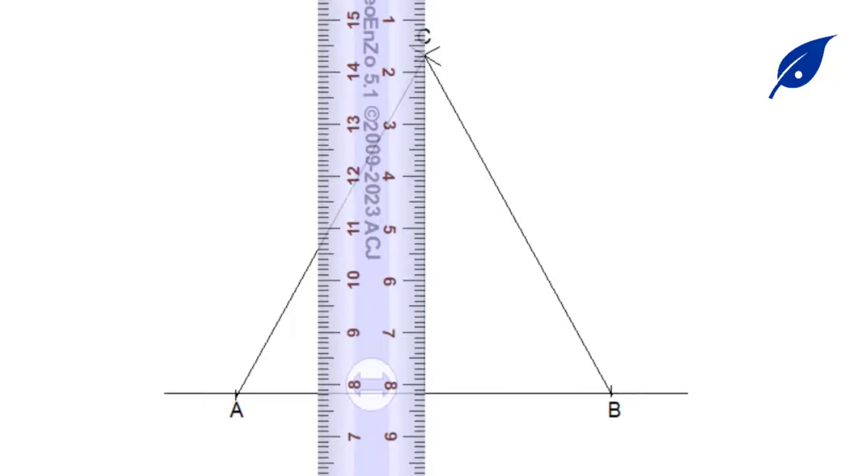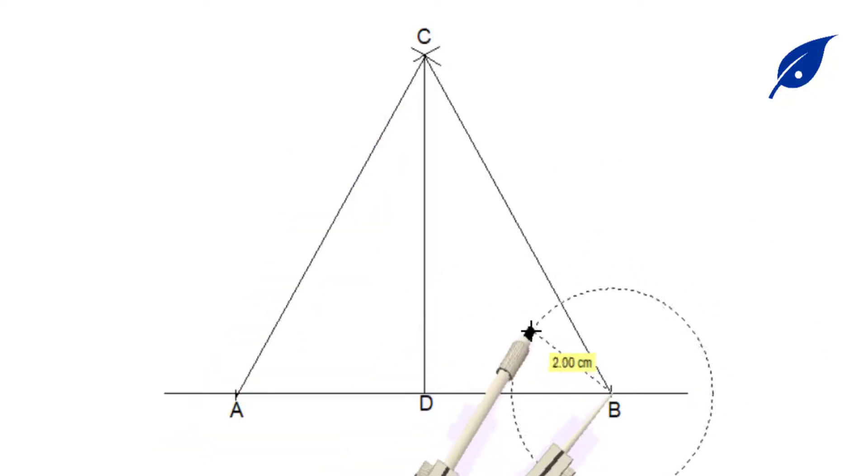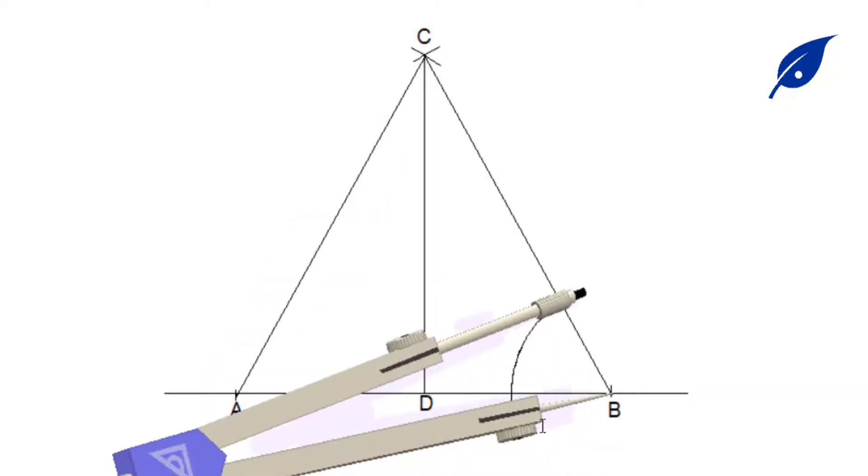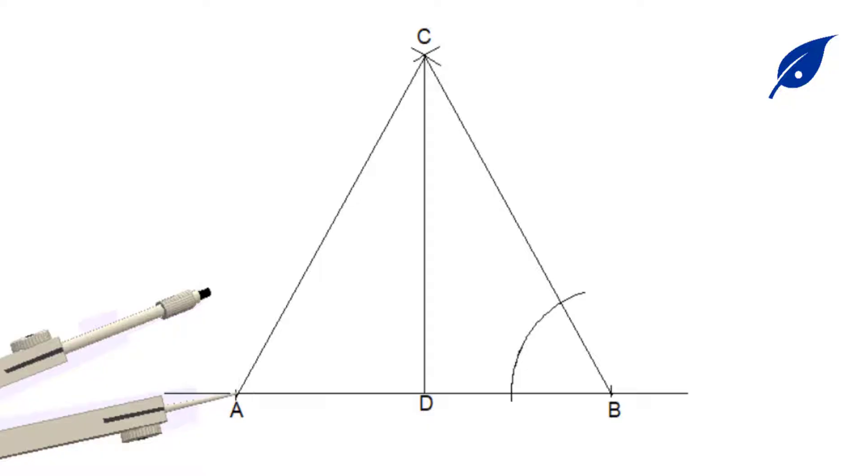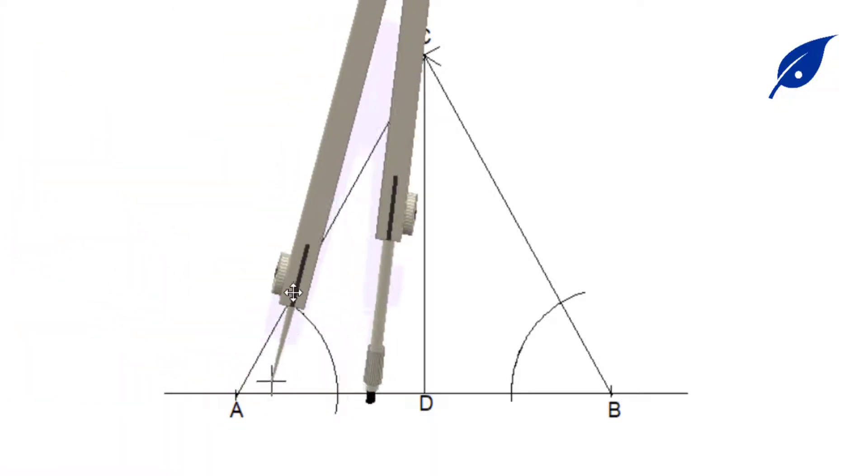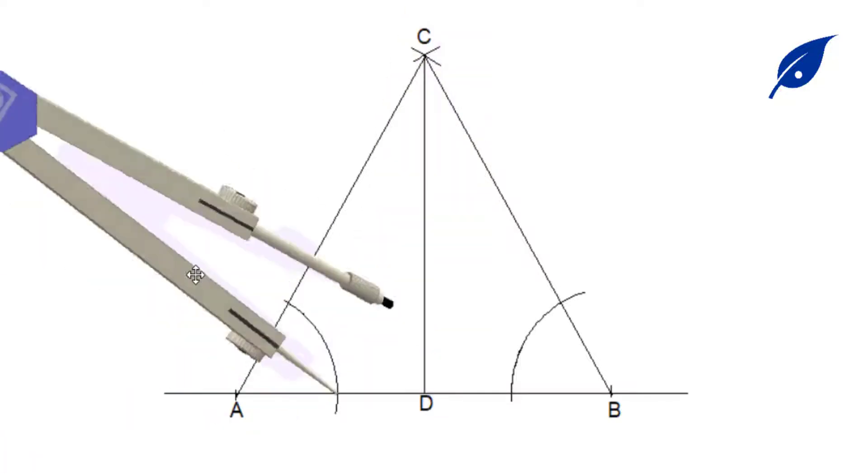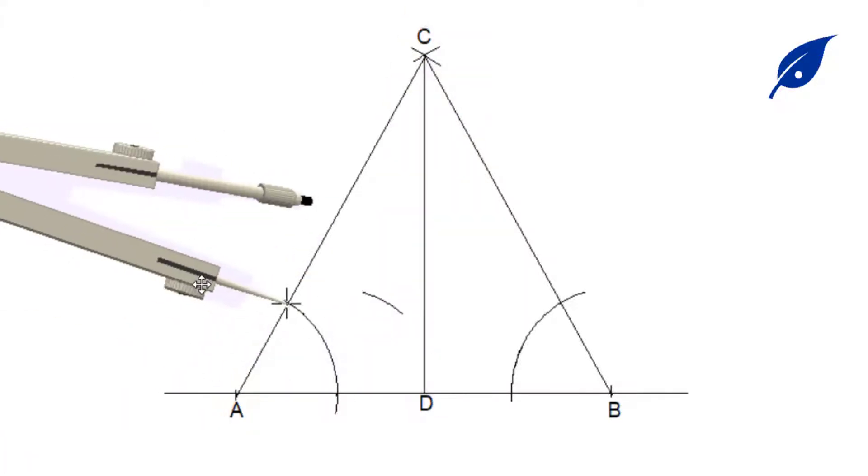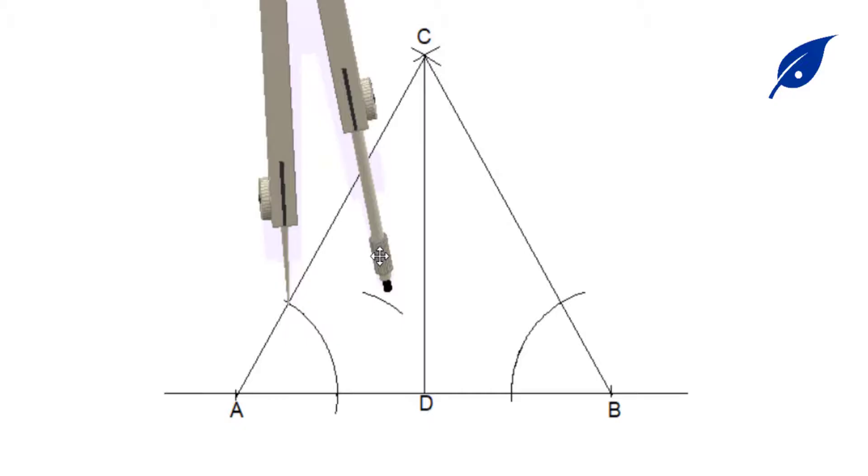Next thing is to bisect the angle at A and the angle at B. After bisecting the angle, we bisect the angle DAC.